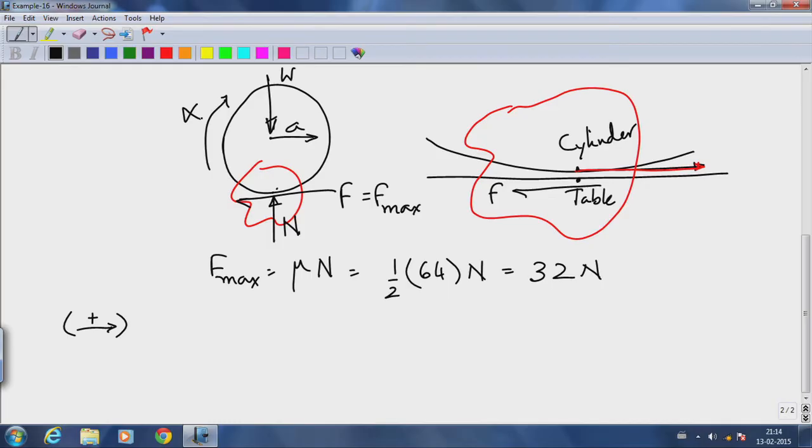If alpha is the angular acceleration and a is the linear acceleration of this hoop, what I do know is that minus F_max equals mass times acceleration, which implies minus 32 equals 64 divided by 10 times the acceleration, which implies the acceleration is minus 5 meters per second squared.